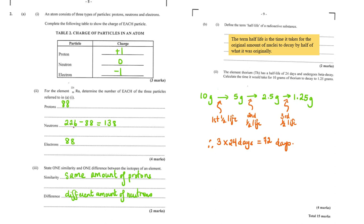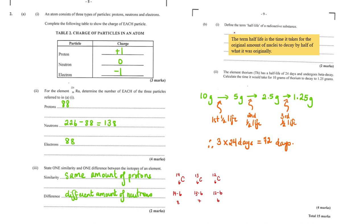State one similarity and one difference between isotopes of an element. Similarity: they have the same number of protons — for example, carbon-14, carbon-13, and carbon-12 all have 6 protons. Difference: they have different numbers of neutrons. Carbon-14 has 14−6=8, carbon-13 has 13−6=7, and carbon-12 has 12−6=6 neutrons.